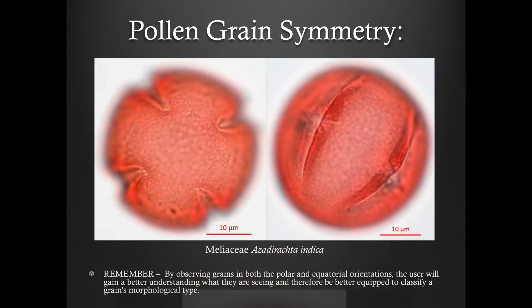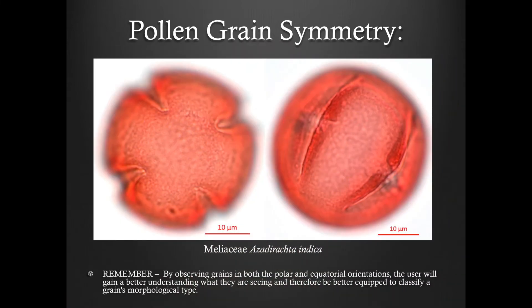Remember, by observing grains in both the polar and equatorial orientations, the user will gain a better understanding of what they are seeing, and therefore be better equipped to classify a grain's morphological type.